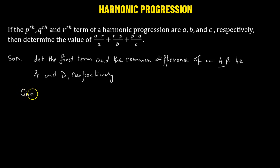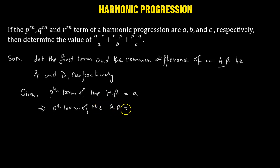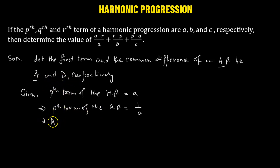Now, let the first term and common difference of the arithmetic progression be A and d respectively. It is given that the p-th term of the harmonic progression has value a, which means the p-th term of the corresponding arithmetic progression is the reciprocal: A plus (p minus 1) times d equals 1 over a. Let this be equation 1.